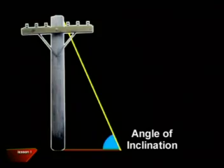We call this angle the angle of inclination. Another name for a slope is an incline. So it makes sense that the steepness or gradient of a slope can be described by the angle of inclination. I think we should look at straight lines today — their gradients, their angle of inclination, the one they form with the x-axis.